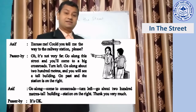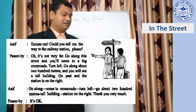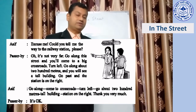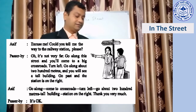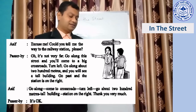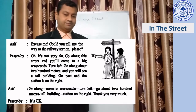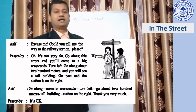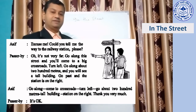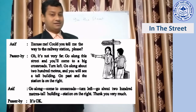Let me first read the dialogue. Asif says: 'Excuse me, could you tell me the way to the railway station, please?' The passerby replies: 'Oh, it's not very far. Go along this street and you will come to a big crossroad. Turn left. Go about 200 meters and you will see a tall building. The station is on the right.'